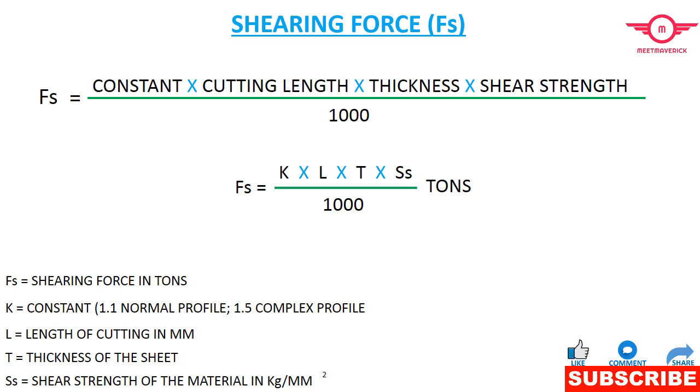Shear strength is mostly considered as 75 to 90% of the tensile strength, depending upon the material. Shearing force is denoted as Fs. Before calculating, please keep in mind the units of each parameter. Fs is shearing force in tons, K is constant (1.1 for normal profile and 1.5 for complex profile), L is length of cutting in mm, T is thickness of the sheet in mm, and Ss is the shear strength of the material in kilogram per mm square.